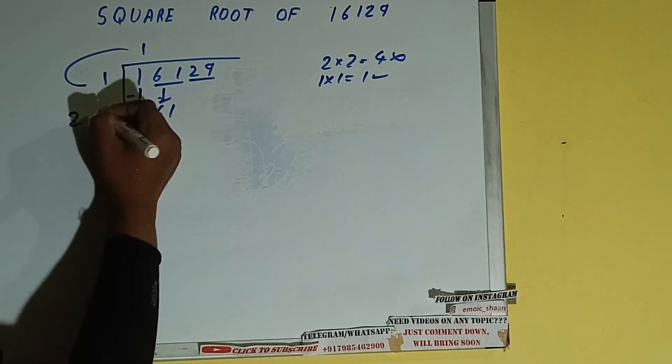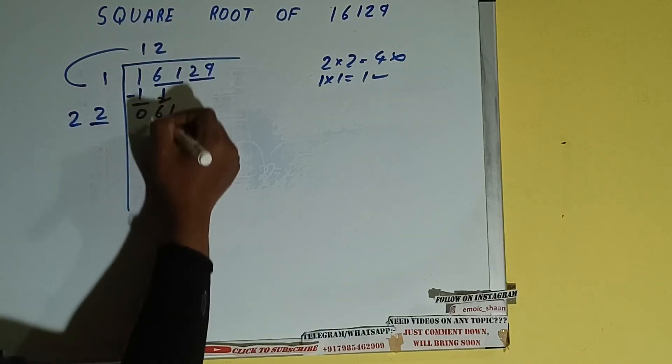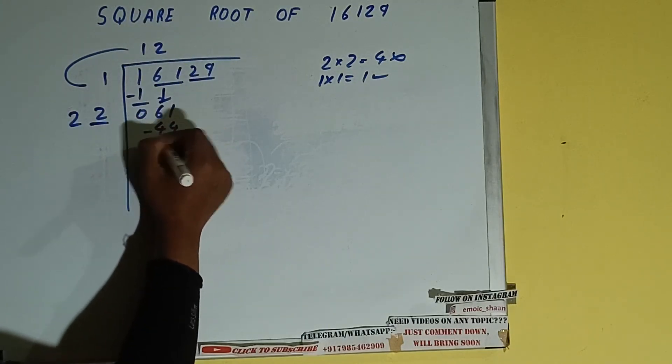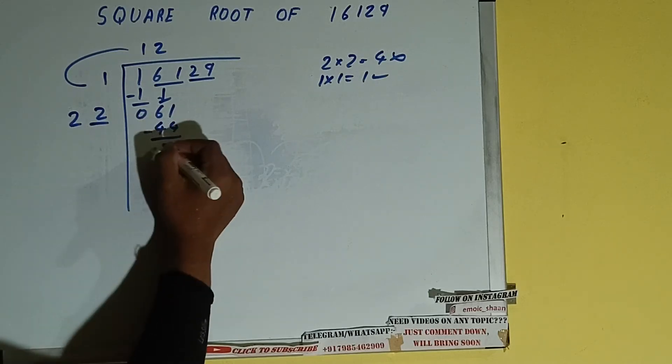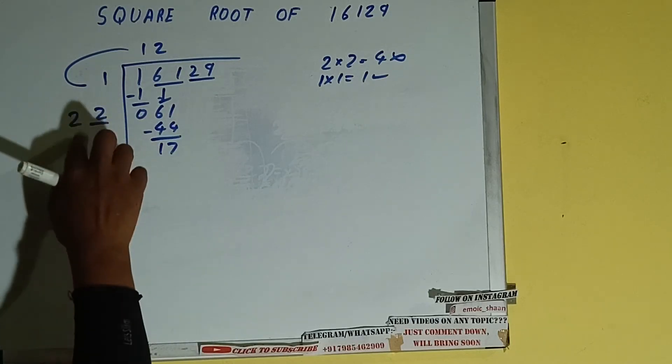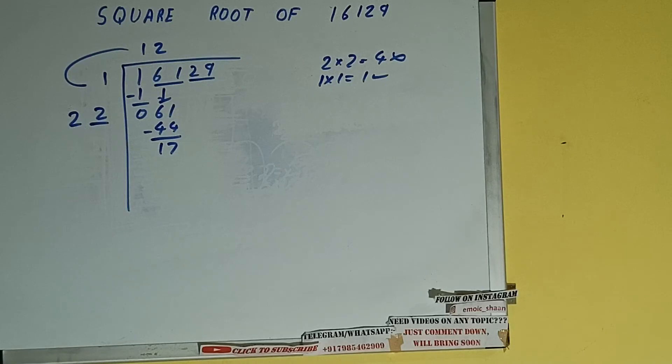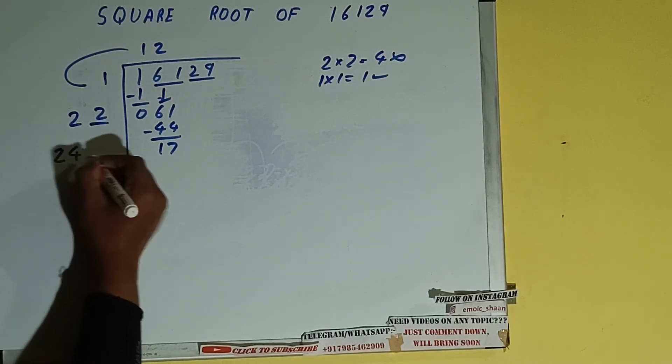Now whatever number we write here, we have to write here also. So we can write 2 here and 2 here, we'll be getting 44. Subtract and 17 will be left. Now 22 times 2 we did, so add both. 22 plus 2 will be 24.